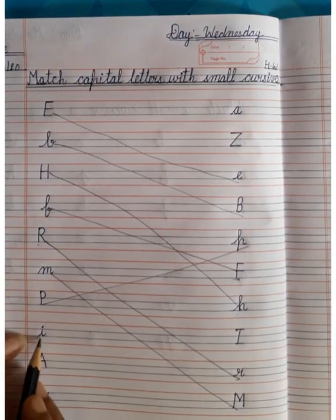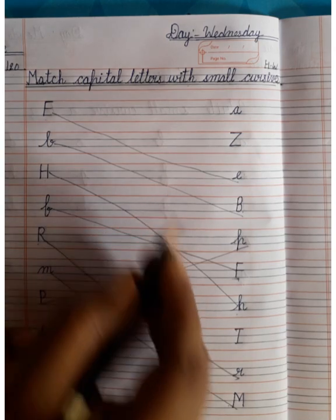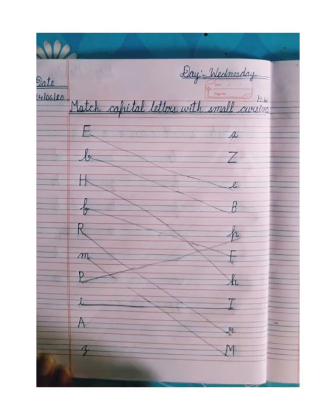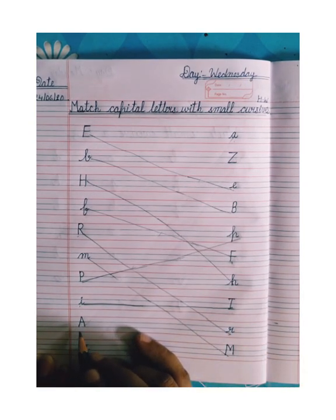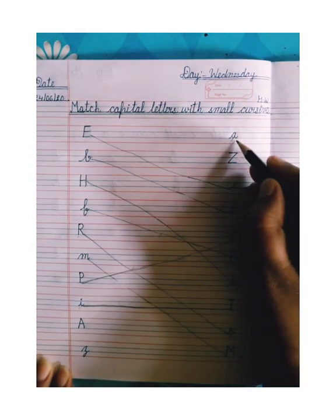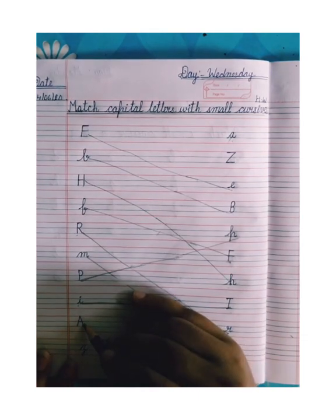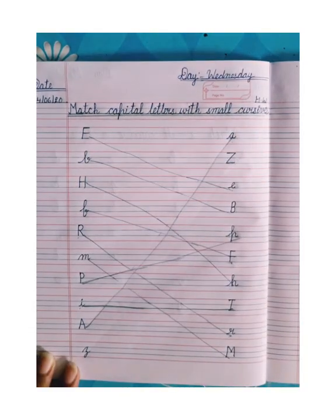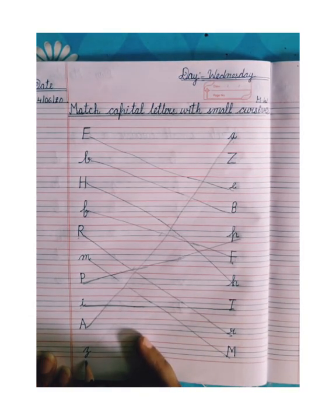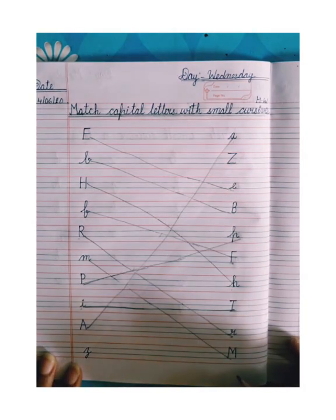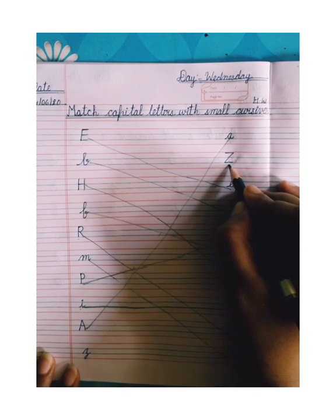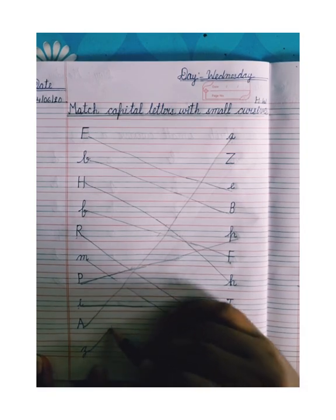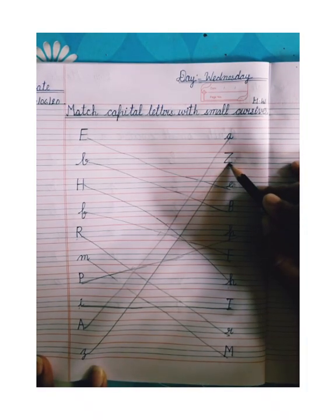Okay, I. Where is I in this side? I. Match this. Okay, next. This is capital letter A. And this side where is small cursive A? This is small cursive A. So, match capital letter A to small cursive A. This is capital letter A — match this.